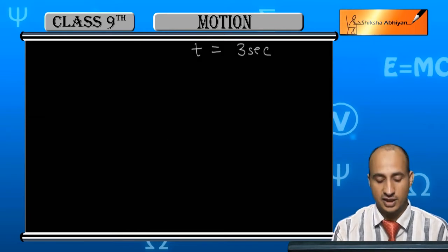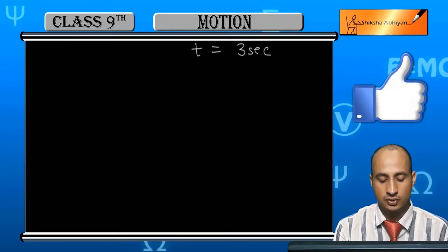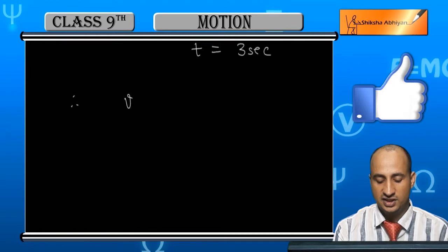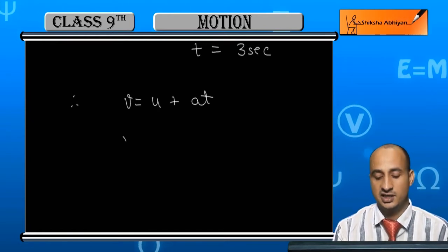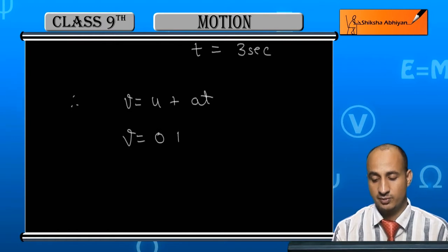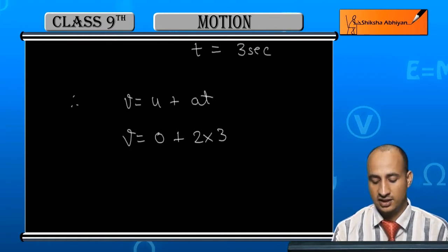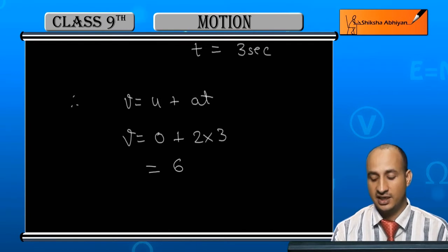Now students, if we start the first equation. So, since V is equal to U plus AT. So here, V is equal to U is equal to 0 plus A is equal to 2 and T is equal to 3. So this is how much? 6. And what is the unit? What is the unit? Centimeter per second.